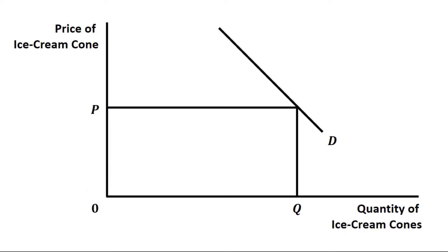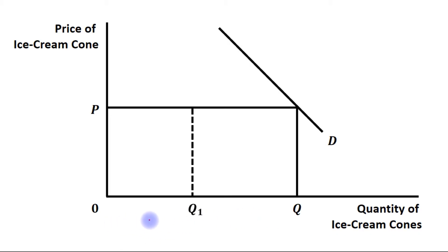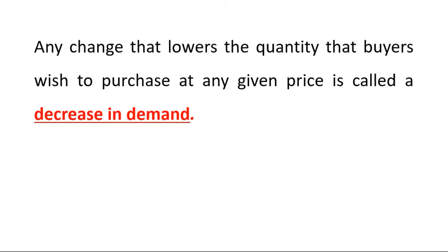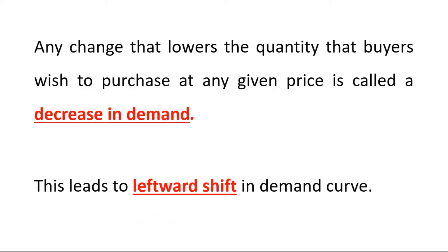Now price is OP and quantity is OQ. If price remains the same at OP however quantity of ice cream cones reduces — from OQ to OQ1 — with no change in price of ice cream cone, this will lead to a leftward shift in demand curve. This will be referred to as decrease in demand, and this leads to a leftward shift in demand curve.